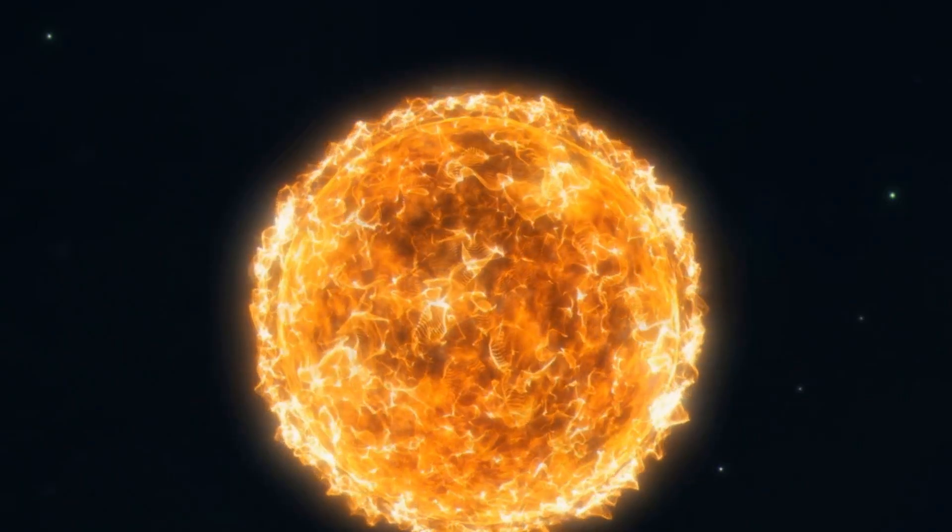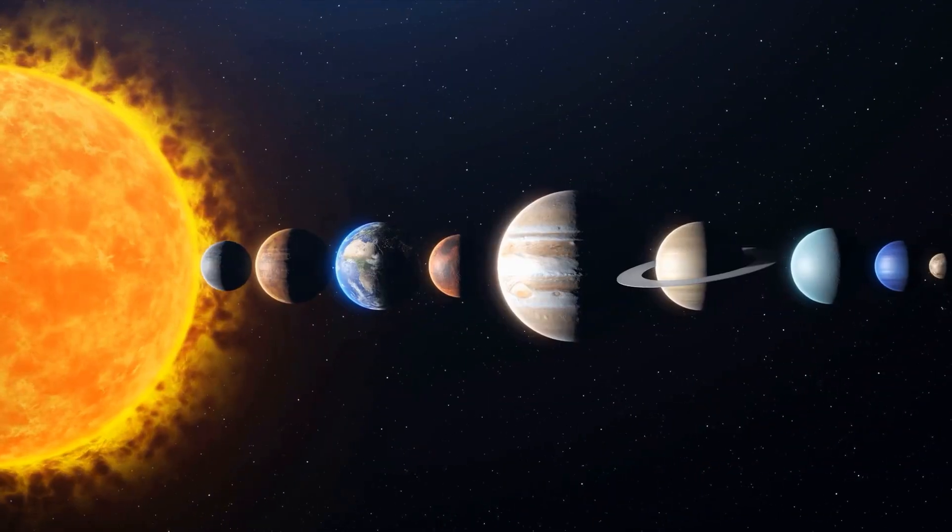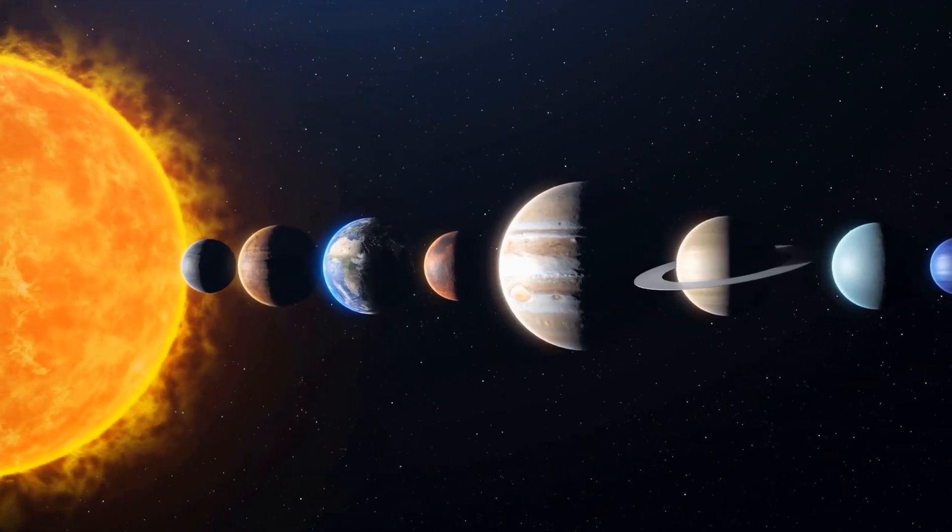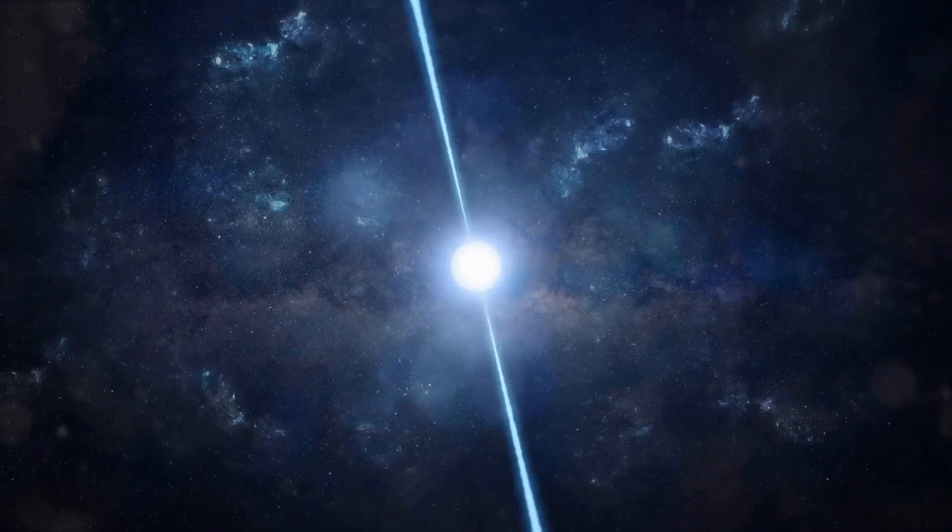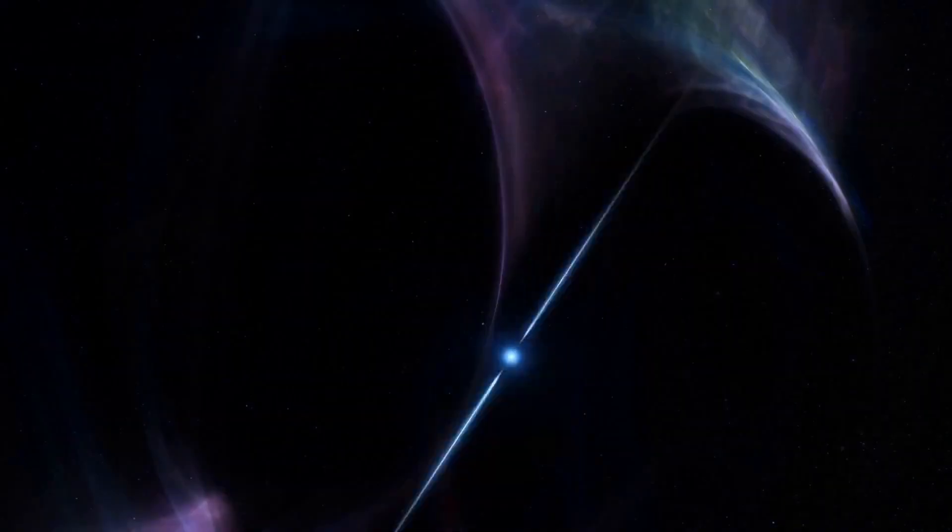Betelgeuse, a sprawling red supergiant, could engulf the orbit of Mars if placed at the center of our solar system. A neutron star? Just a tiny dot in comparison, but packing unimaginable power.